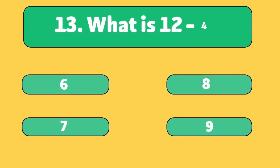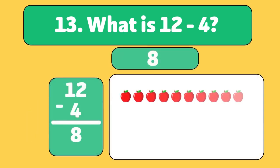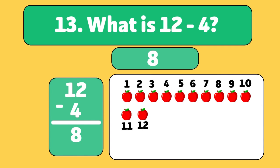What is 12 minus four? The answer is eight. We start with 12 apples and take away four. Let's count. One, two, three, four. We have eight apples left.